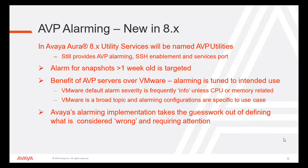What's new in 8.x? In Avaya Aura 8.x, Utility Services will be renamed as AVP Utilities. It still provides AVP Alarming, SSH Enablement, and Services Port functionality. An alarm for snapshots greater than one week old is targeted. The benefit of AVP servers over VMware alarming is that it is tuned to intended use. VMware default alarming severity is frequently information-based unless it is CPU or memory related. VMware is a broad topic and alarming configurations are specific to use case. Avaya's alarming implementation takes the guesswork out of defining what is considered wrong and requiring attention.